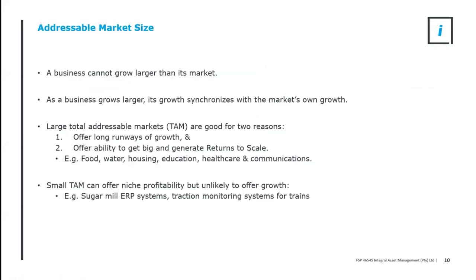The final thing to consider is the addressable market or total addressable market size. A business cannot grow larger than its market. If there is only one business in a market, the business's growth is the same as the market's growth — they are the same thing. A market is just a collection of businesses. Therefore, a business cannot grow faster than its market forever. As it gains market share it can initially, but ultimately its growth will synchronize with the market's growth, and that industry's growth will synchronize with the country's and world's growth. Nothing grows forever — trees do not grow to the sky.